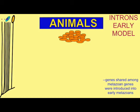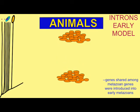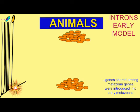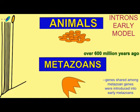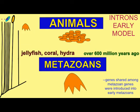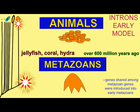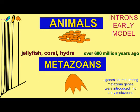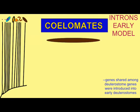Intron number has increased in more complex organisms. For example, the most primitive eukaryote, Giardia, possesses four introns in its entire genome, while the average mammalian gene possesses eight introns in one gene alone.